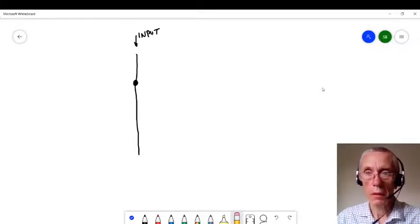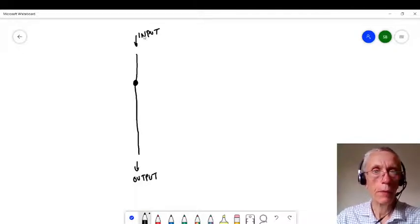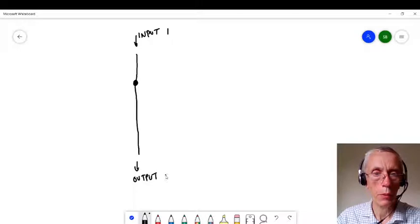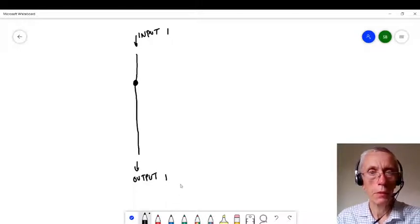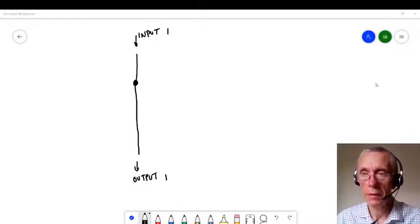Right, so this is the output. Now clearly, if I have an input here of one, the output is going to be one. There's no memory taking place there so far. It's just simply a relay circuit.